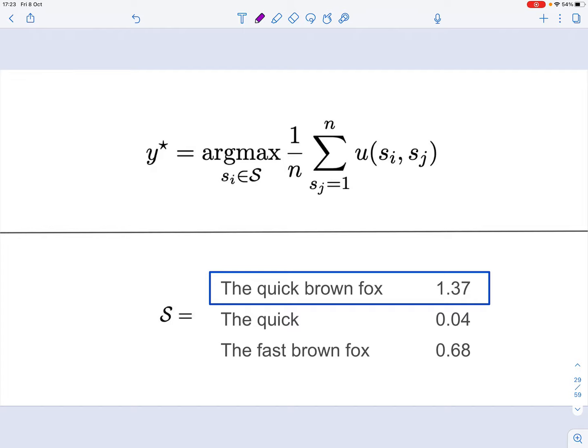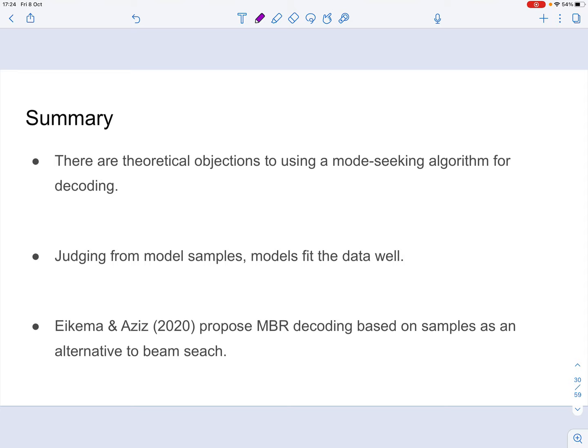And finally, we would simply pick the one candidate translation that has the highest utility. That's what this formula at the top means. It simply means to select the one hypothesis with the highest utility. So intuitively, MBR is a consensus decoding approach that will, from a pool of samples, it will select the one hypothesis that is most similar to all other hypotheses in the pool.